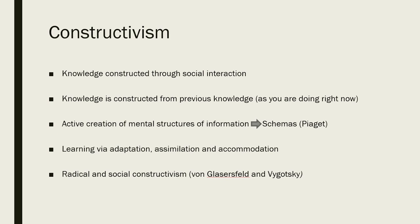Constructivism is a general concept that includes a number of approaches, with radical constructivism and social constructivism being the most well known. Radical constructivism proposes that there cannot be external truth because we all construct our own personal realities. On the other hand, social constructivism, as represented by Vygotsky, holds that the process of constructing knowledge occurs through social interactions, including the use of language. In the following lessons you will take a closer look at social constructivism, since our modern understanding of the learning process is greatly influenced by Piaget, Vygotsky and other constructivist theories.